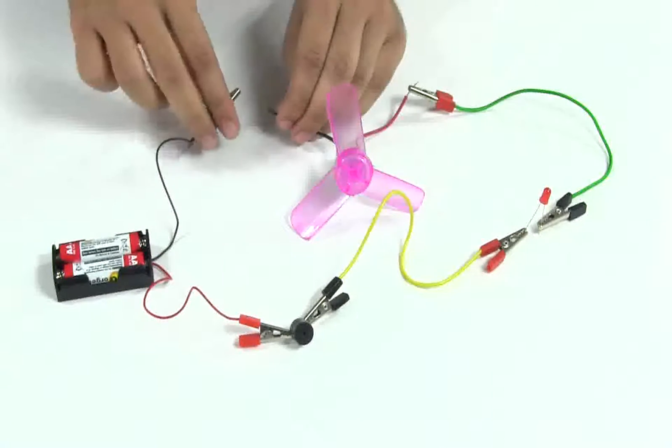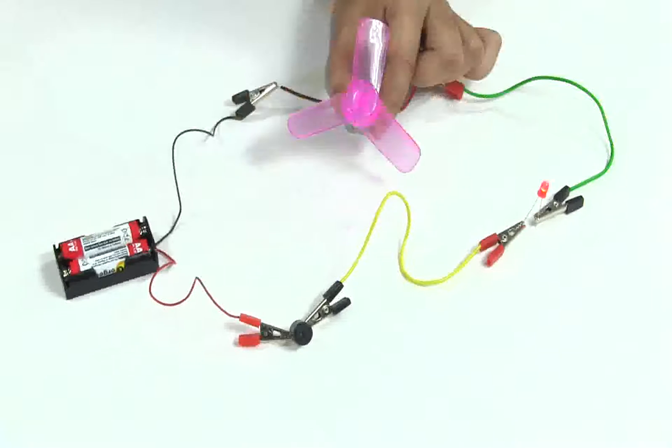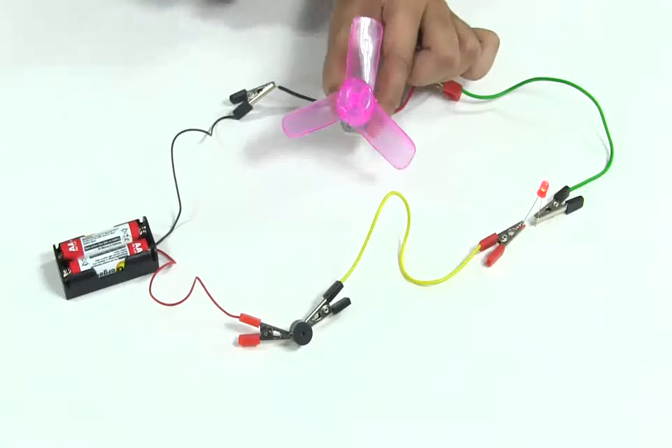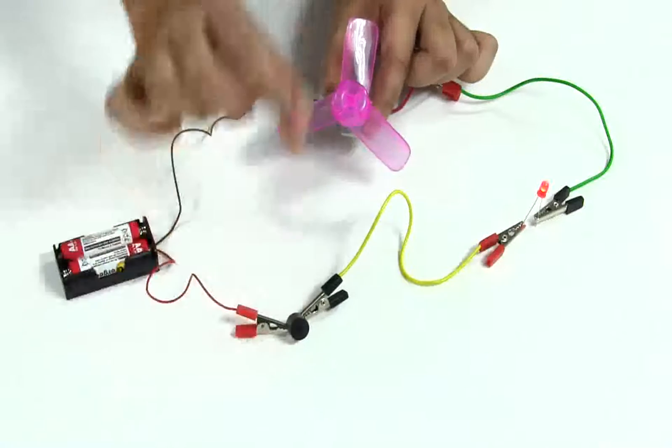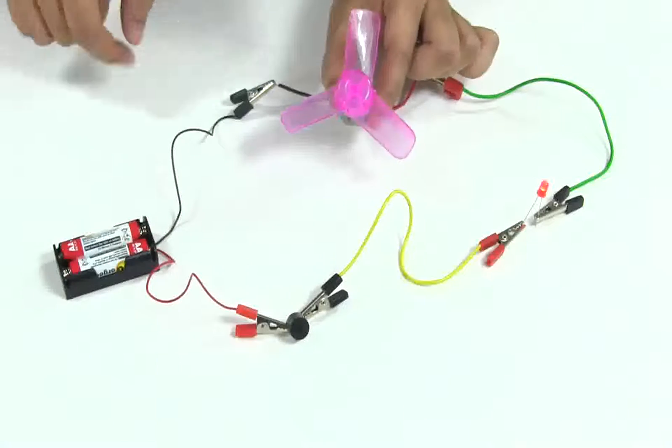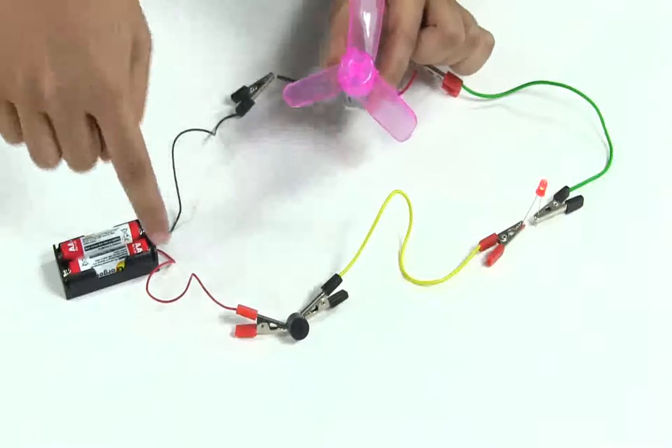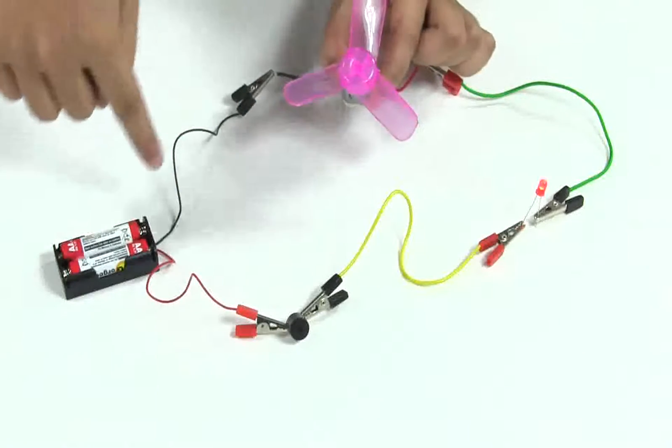We can see the motor is not rotating, the LED is dimly lit, and the buzzer is making very little sound. So this is the series connection, which has only one loop to carry electricity, and all the elements are getting the same amount of current.